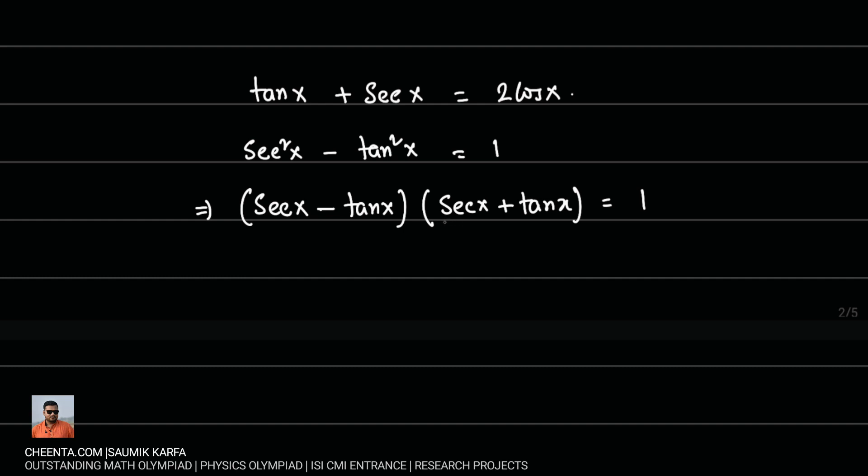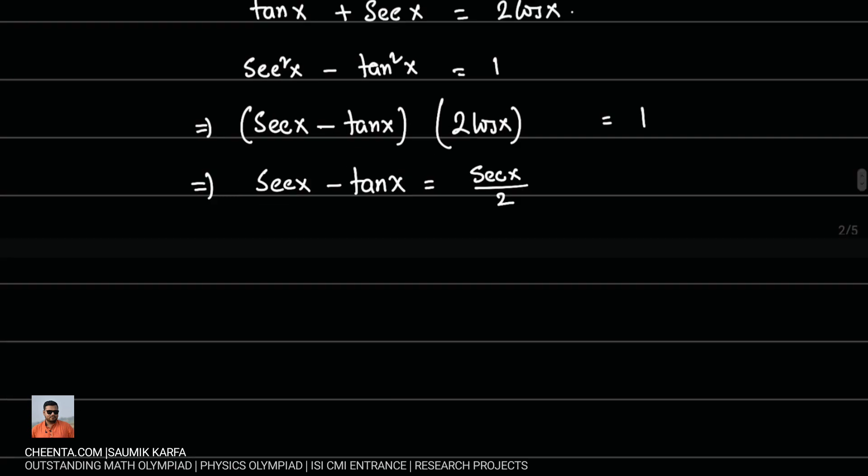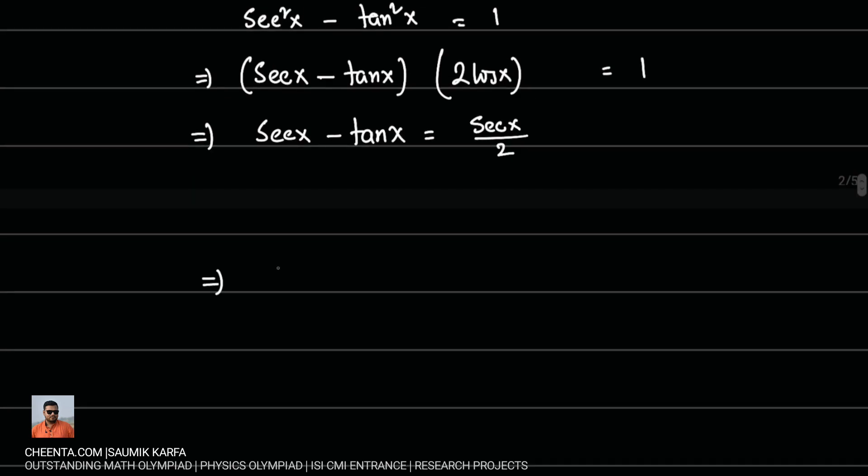The given value of sec x plus tan x is twice of cos x. So this can be replaced with twice of cos x. And then we get sec x minus tan x equals 1 over 2 cos x.